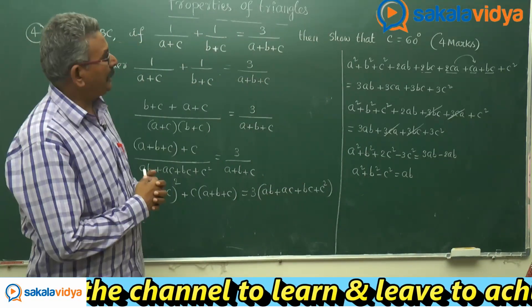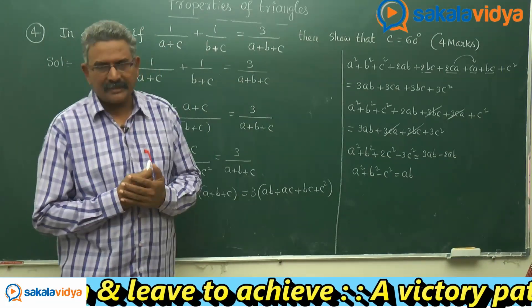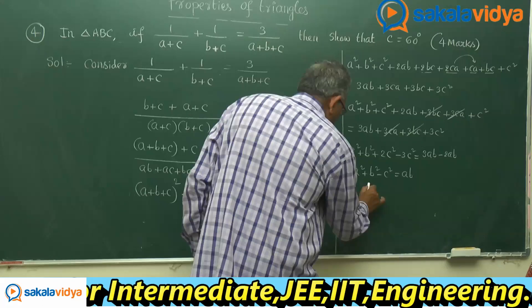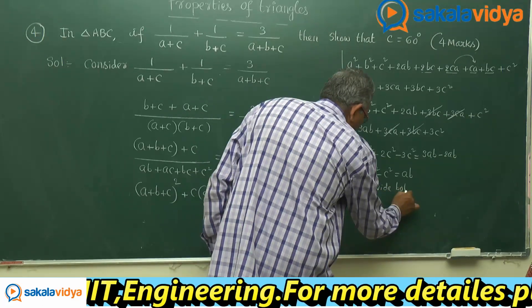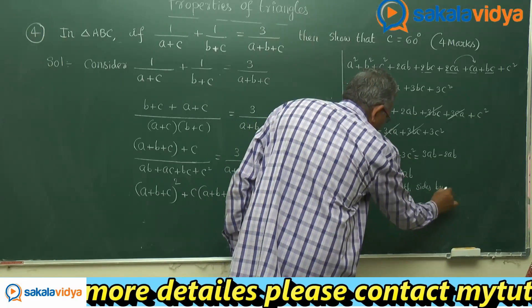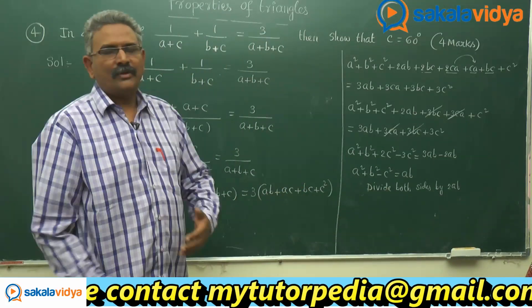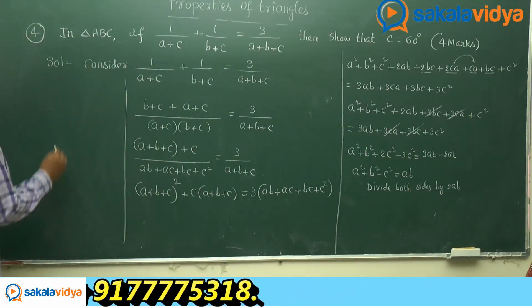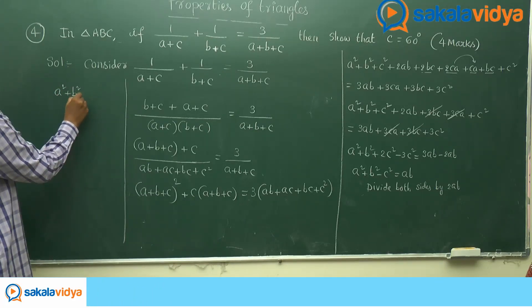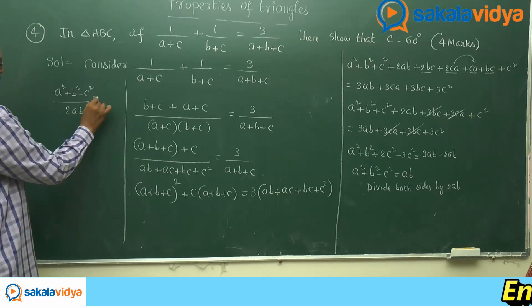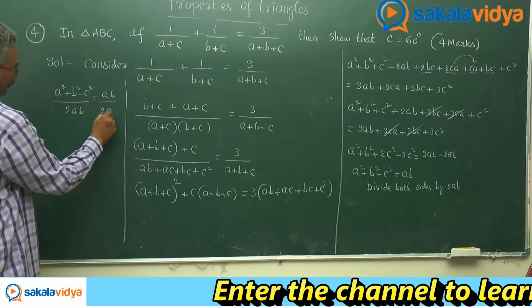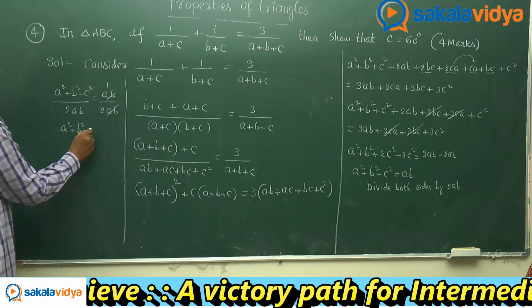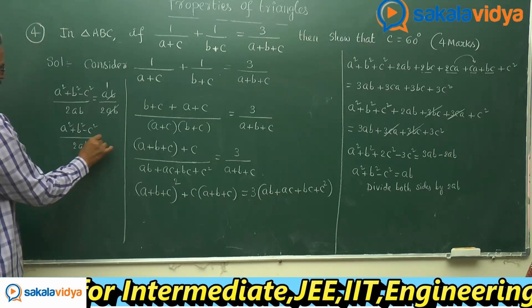As I already told you, what we aim to prove is C equal to 60 degrees. In order to prove C is equal to 60 degrees, it is enough to prove that cos C equals cos 60, that is, one half. So, divide both sides by 2AB to get the cosine rule value. That means we can write A square plus B square minus C square divided by 2AB, and AB divided by 2AB. AB gets cancelled, and we have A square plus B square minus C square upon 2AB equals 1 by 2.